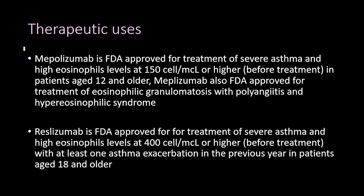Mepolizumab is FDA-approved for treatment of severe asthma with high eosinophil levels at 150 cells per microliter or higher — referred to as eosinophilic asthma. It is approved for patients aged 12 and older with eosinophil counts of 150 cells per microliter or higher before treatment. Mepolizumab is also FDA-approved for eosinophilic granulomatosis with polyangiitis.